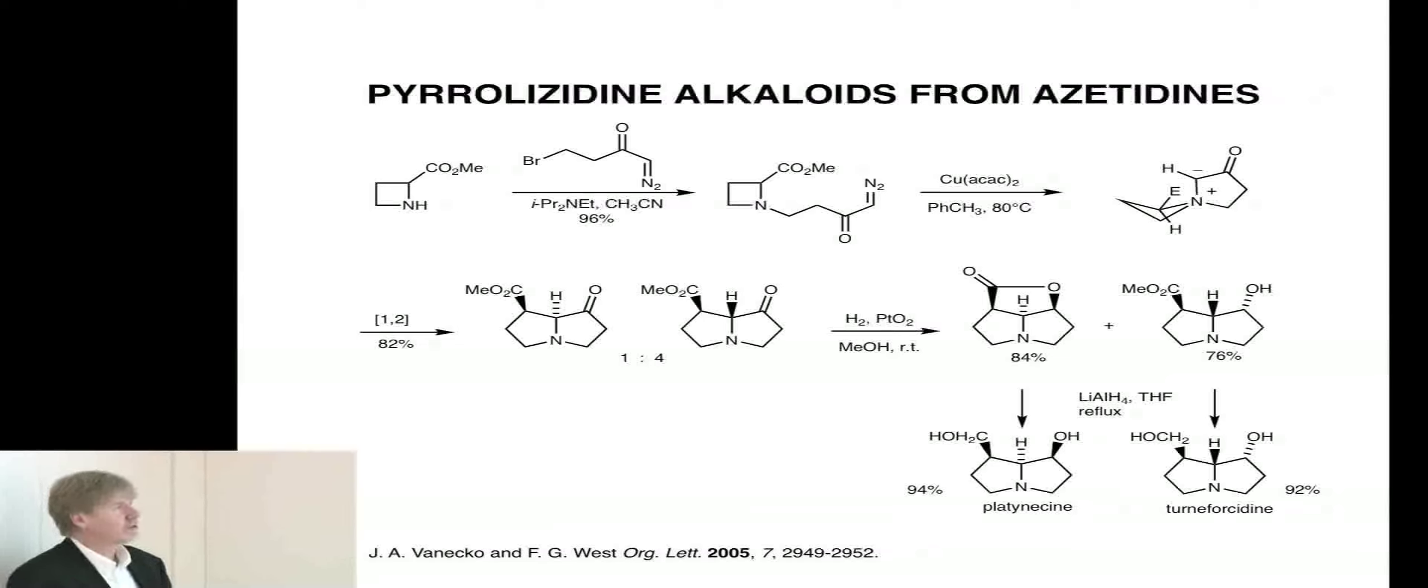With copper, this closes to make the spirocyclic ylid. This undergoes just ring expansion, rearrangement by migration of the ester-substituted carbon, to give us these two diastereomeric pyrrolizidine products. Unfortunately, the diastereoselectivity was not so good. The overall yield was good. The other unfortunate thing is these are completely inseparable.